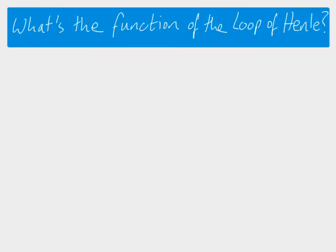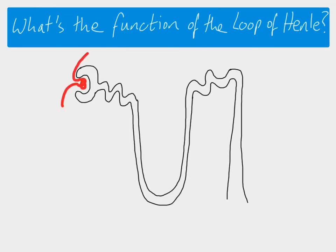So first of all, the function of the loop of Henle. If we draw our nephron, what we know already is that the filtrate which is formed here in the Bowman's capsule is going to move along through the proximal convoluted tubule, then down through the loop of Henle, then through the distal convoluted tubule and down through the collecting duct. What the body is trying to achieve is that as the filtrate moves down through the collecting duct, it wants that filtrate to become more and more concentrated so that by the end, when we have our urine, our urine is really really concentrated. That's what our body is trying to achieve, and it's the loop of Henle that allows the production of this very concentrated urine by the time we get to the end of the collecting duct.